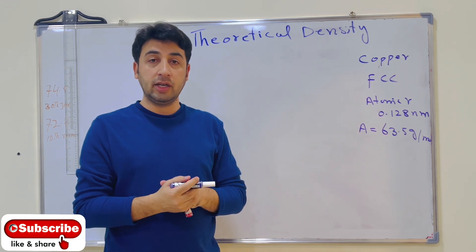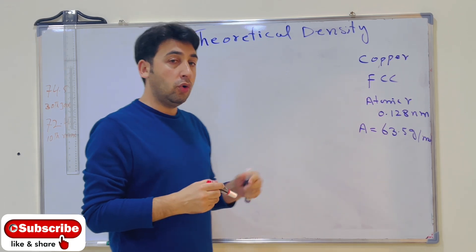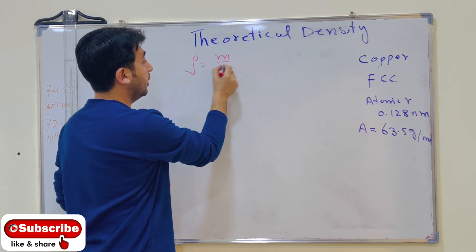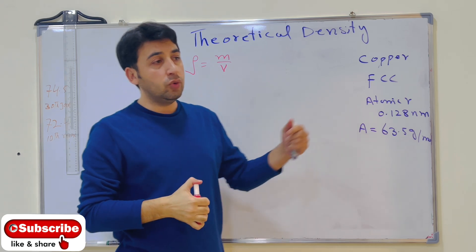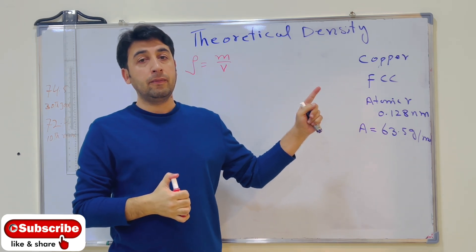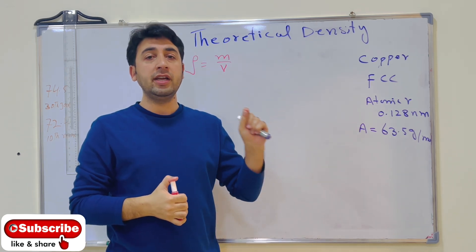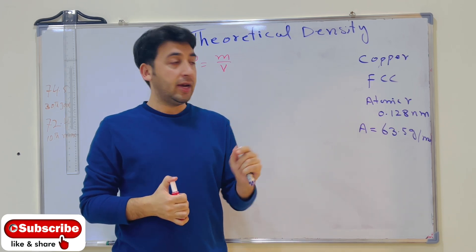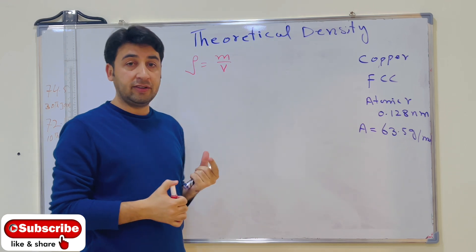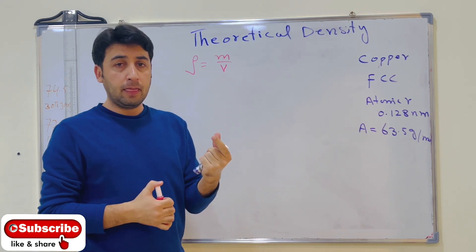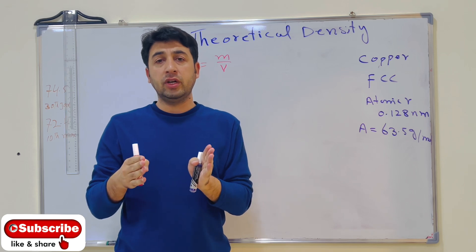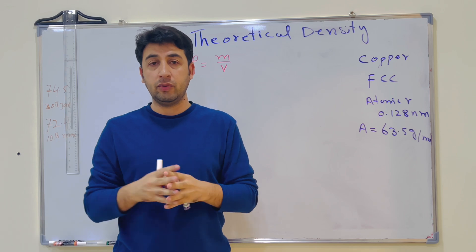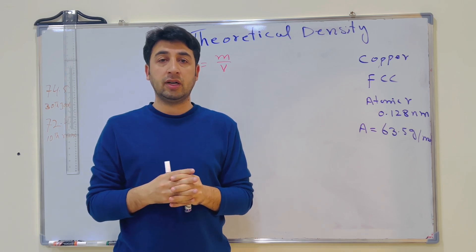We know that density is equal to mass per unit volume. Here we will calculate the theoretical density from the unit cell — we need to find the mass of atoms in a unit cell divided by the volume of the unit cell. Different types of unit cells have different numbers of atoms, as we discussed in the previous video on the structure of crystalline solids.